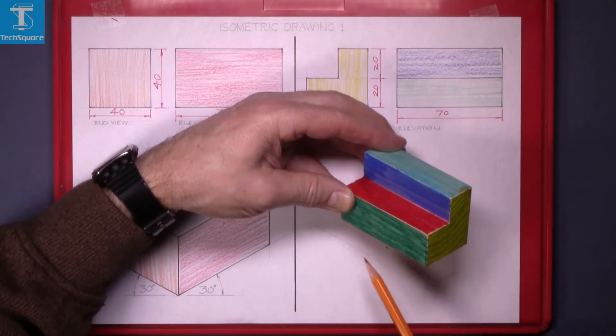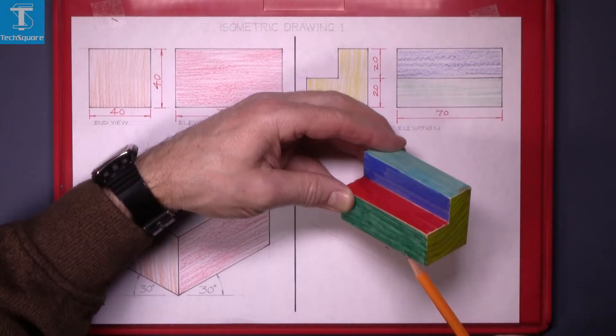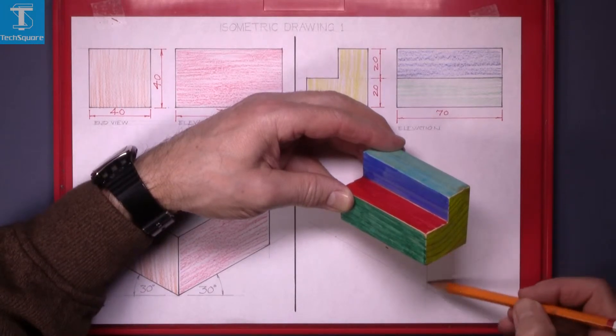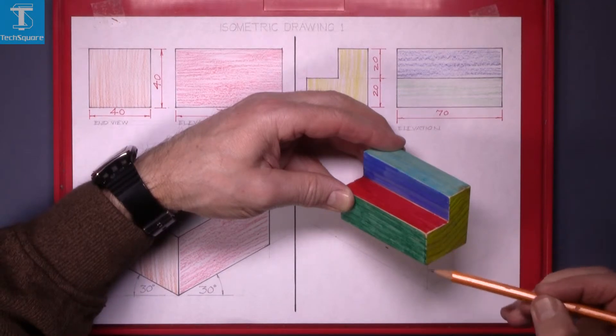That line is at 30 degrees and represents that bottom corner. This line represents the bottom corner here. And the vertical line is the front corner here.